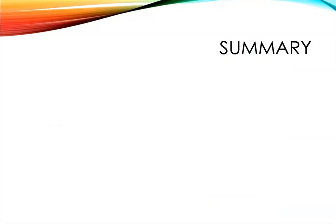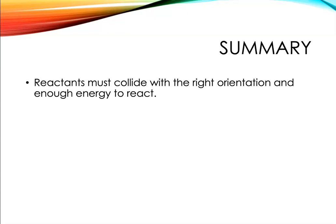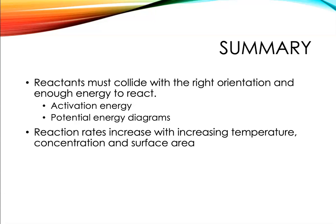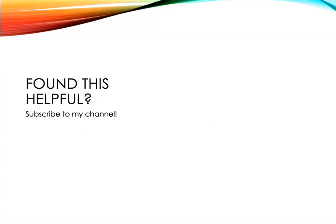That's pretty much everything about collision theory. Reactants must collide in order to react — with the right orientation and enough energy. Both conditions must be met or the particles will just separate. They need the minimum activation energy to react, which we can describe with potential energy diagrams showing the transition state and activated complex. Reaction rates increase with increasing temperature, concentration, and surface area — it's all about having more collisions. Catalysts increase reaction rates but are recovered in their original form. If you found this helpful, please subscribe and leave a comment. Learn chemistry every day — it's the path to success.